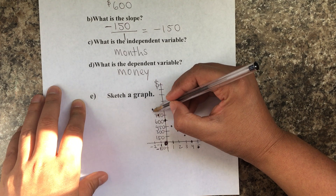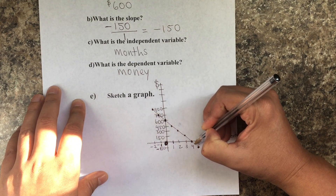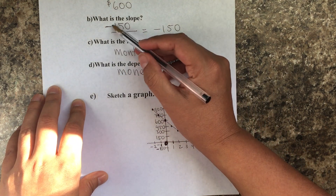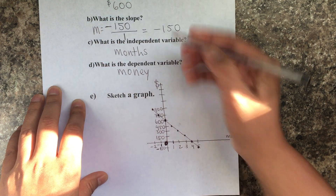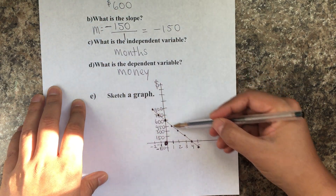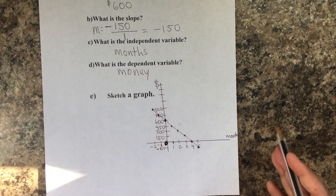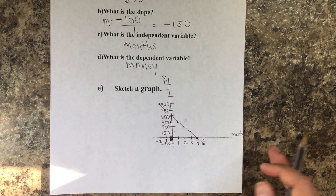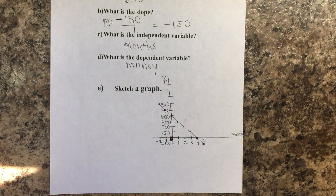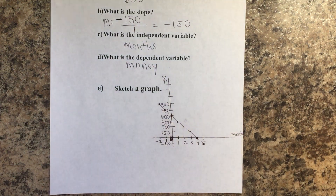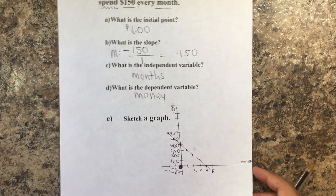This is going to be my line, and if you notice the slope is negative, so my line goes down from left to right. Let's do another example.